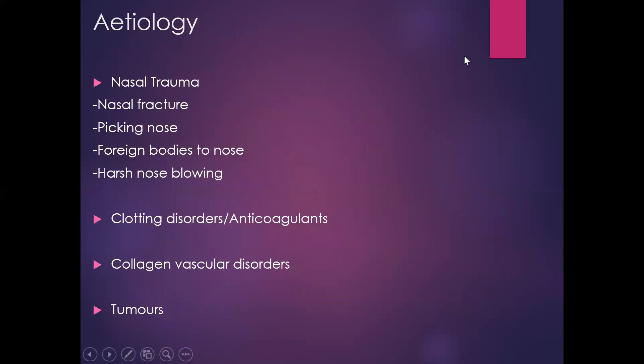In terms of etiology, nasal trauma is by far the most common cause and should always be assessed in the history. The patient may have a nasal fracture, so look for external swelling, bruising, and any nasal deformity. You can also get it from picking the nose, foreign bodies, or harsh nose blowing. It is possible to get a septal haematoma without a history of trauma, but much rarer — in which case consider collagen and vascular disorders, anticoagulant use, or tumours within the septal cartilage that bleed.